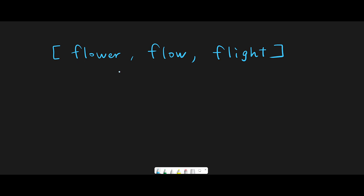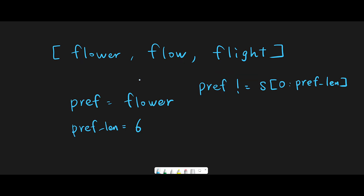My strategy is very simple: check one by one. First we use flower and flow and create a longest common prefix — in this case flow. Then we use flow with flight, and the longest common prefix should be fl. That's why in the end we can return fl. That is the basic idea.